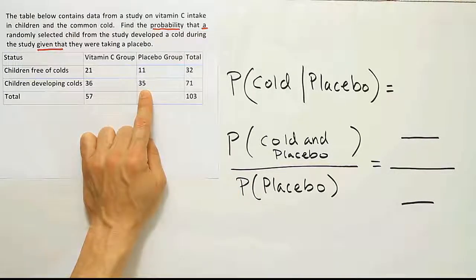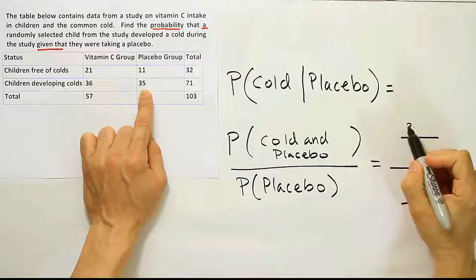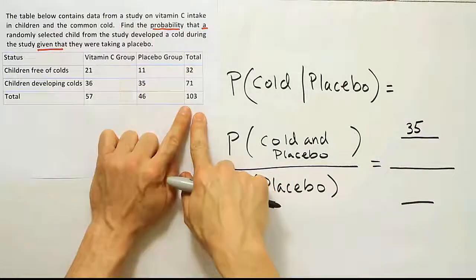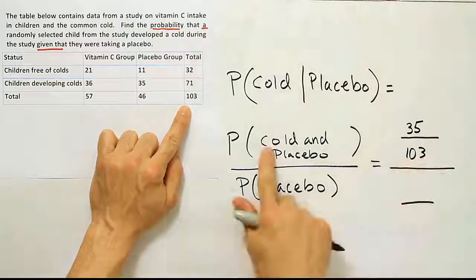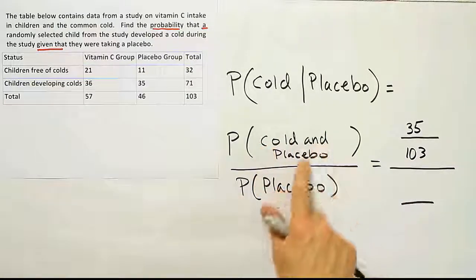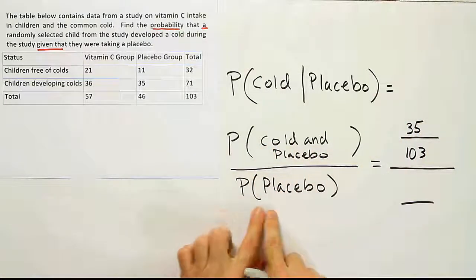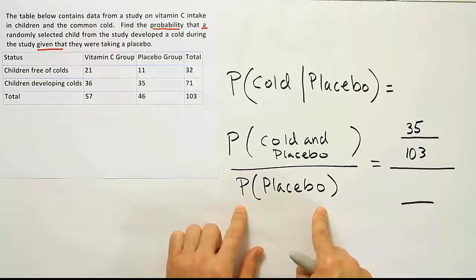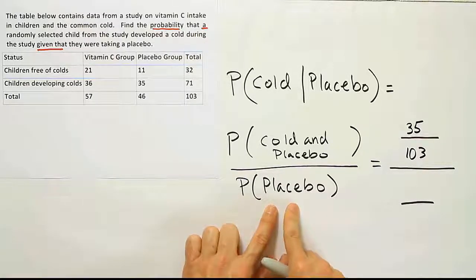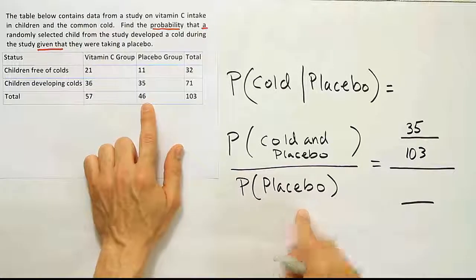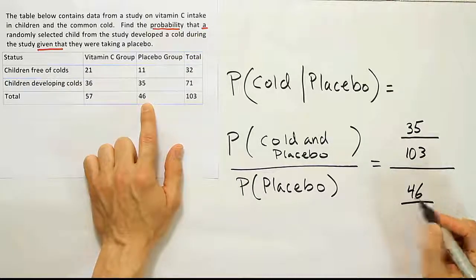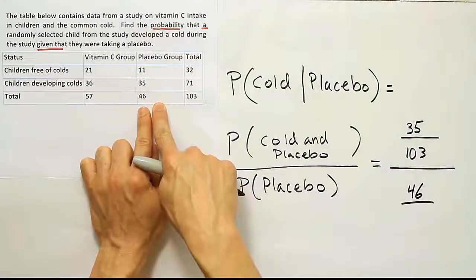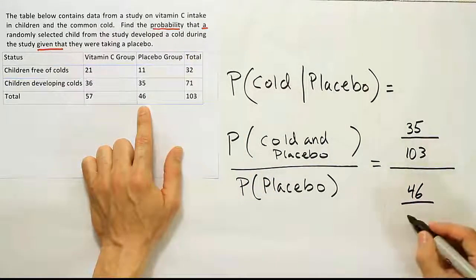Okay. So at that point, we'd say 35 over the grand total of 103 is the probability that a subject is in the cold and placebo group, right? Now, if we do just the probability that a subject is in the placebo group, it'd be the number of children in the placebo group. So placebo group 46, the number of total children in that category, divided by the grand total of 103.